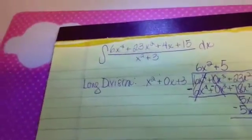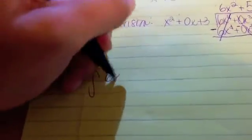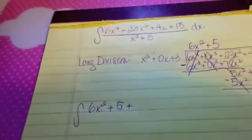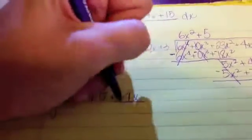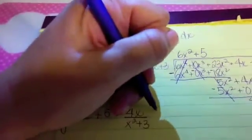Internal rational expression to the integral of the quotient 6x squared plus 5 plus the remainder which is 4x over the divisor x squared plus 3. And we're integrating with respect to x.